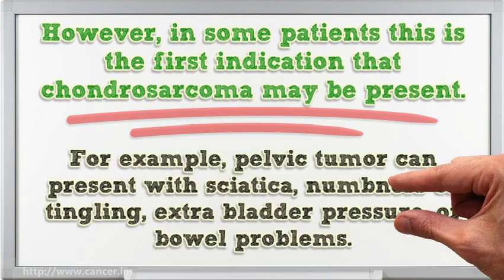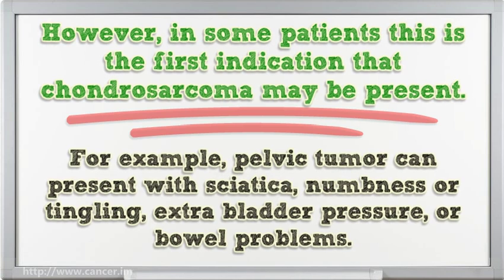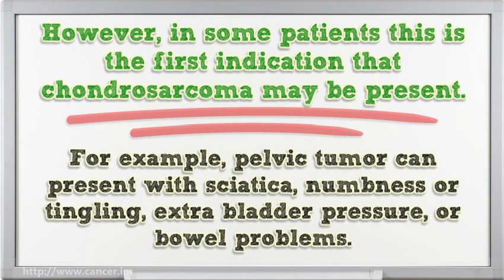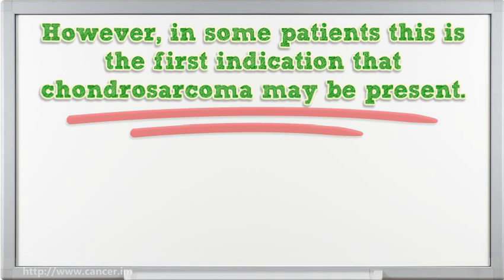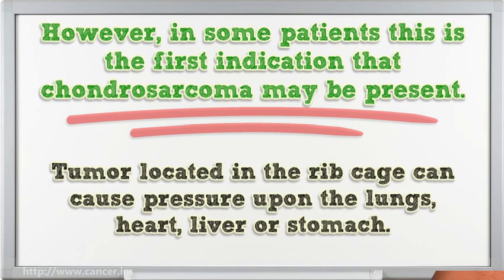For example, a pelvic tumor can present with sciatica, numbness or tingling, extra bladder pressure, or bowel problems. A tumor located in the rib cage can cause pressure upon the lungs, heart, liver, or stomach.